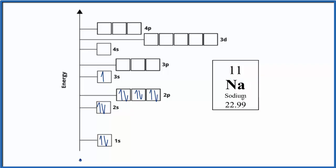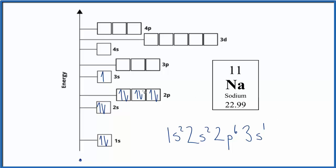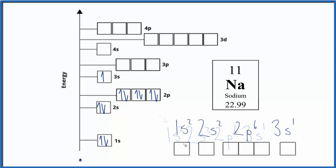If we wanted to write the electron configuration, we'd have 1s², 2s² with two electrons, 2p with 6 — p holds up to 6 — and then 3s has 1. So this is the electron configuration for sodium. You could also write the orbital diagram in a more linear fashion. Both the orbital diagram and the electron configuration are just telling us the same information: where those electrons are around the nucleus of an element.